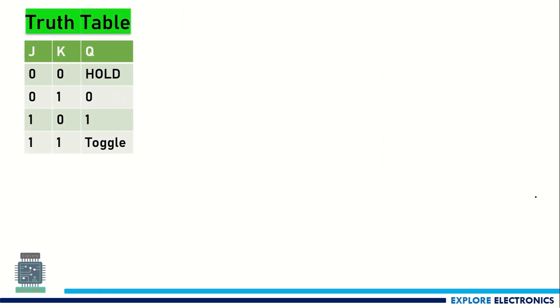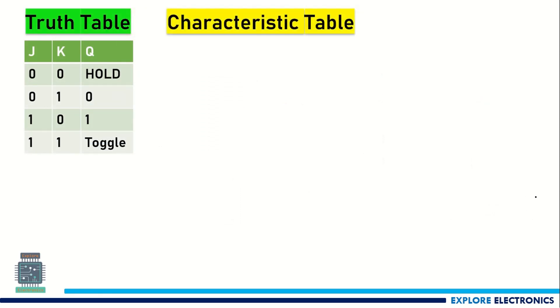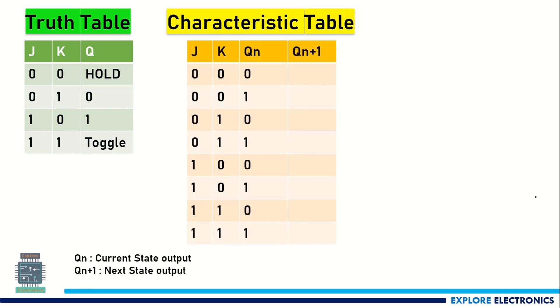By looking at the truth table, let us now construct the characteristic table. To write the characteristic table, we need to write all possible cases of inputs along with all possible cases of current state.